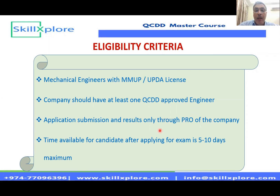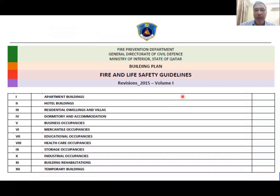The process will go through the PRO of the company. He has to apply online with the company registration card, license card, and your valid UPDA license. Once applied, you will receive a message to go for the exam within five to ten days — maximum two weeks — and you will receive the notification about the exam. The study material is based on the QCDB fire and life safety guidelines, issued in 2015, which is segregated and classified for different types of occupancy: apartment buildings, hotel, residential, dormitory, business, mercantile, educational, secure storage, industrial, etc.